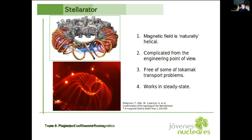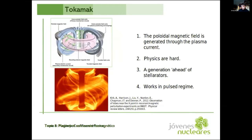This is Wendelstein 7-X in Greifswald, Germany. As I said, magnetic fields in stellarators are naturally helical because of the shape of the magnets. It's complicated from the engineering point of view because manufacturing these magnets is very complicated. They have to be very precise, and they have some other advantages regarding physics. For example, they are free from some of the tokamak transport problems relating particles and heat, and they also work in steady state because stellarators don't have this central solenoid.